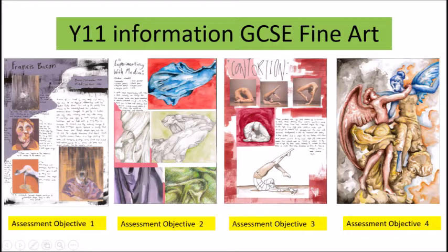Your child will be assessed against the 4 assessment objectives. Assessment objective 1 is creating high quality artist research and making their own practical responses to their work. Assessment objective 2 is exploring a variety of materials such as paint, printing, etc., trying techniques that are most likely to be successful.